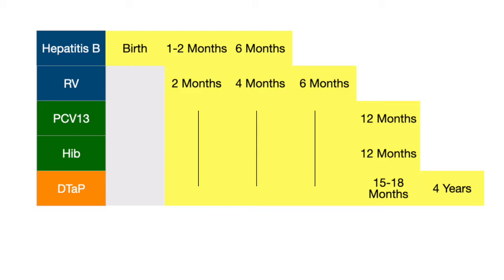Let's move on to DTaP, which actually covers against three separate organisms: diphtheria, tetanus, and pertussis.